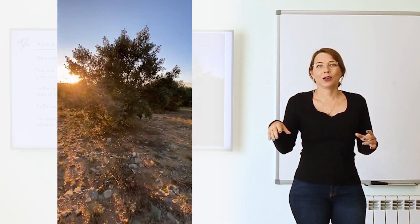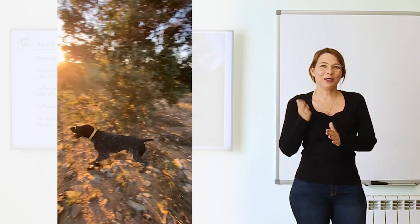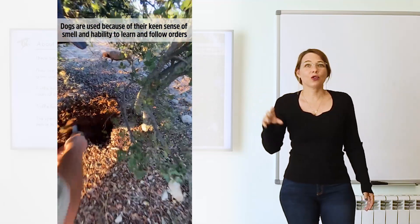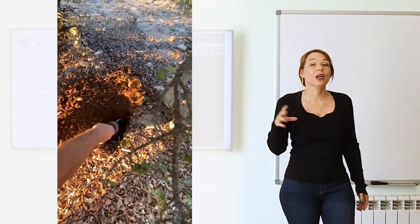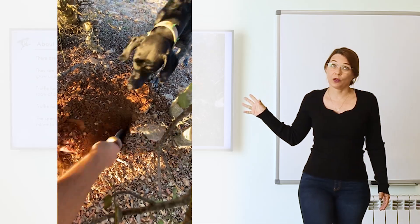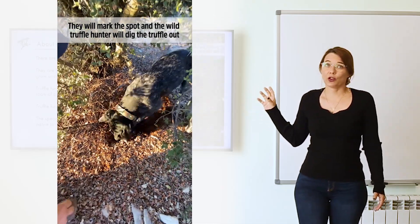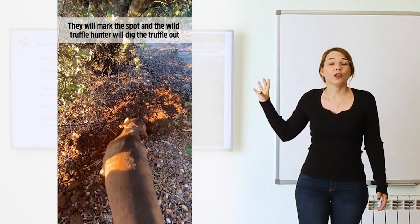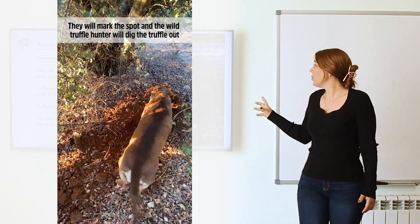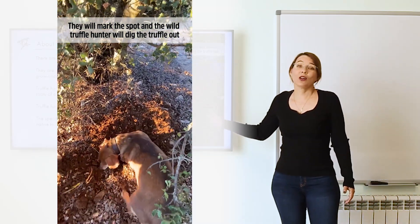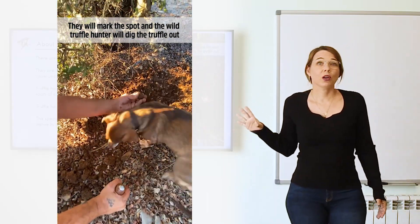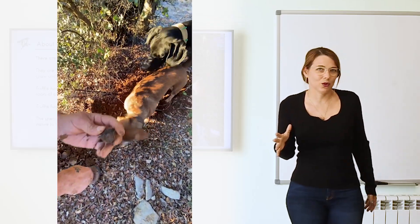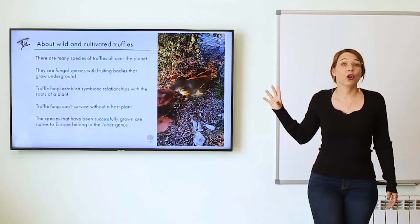The fungus establishes a mycorrhizal relationship — a symbiosis — with the tree. The tree gets from the fungus protection from pathogens and help absorbing nutrients from the ground. In return, the tree does something the fungus cannot do: provide carbohydrates, sugars. Fungi cannot do photosynthesis, so they need the tree to help them. Truffle species cannot survive without a tree, a bush, or in some cases even annual plants — they have to be associated with the roots of a plant.